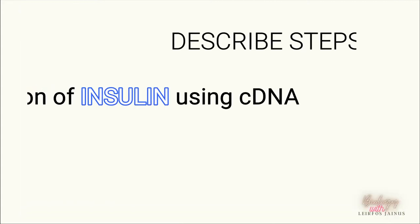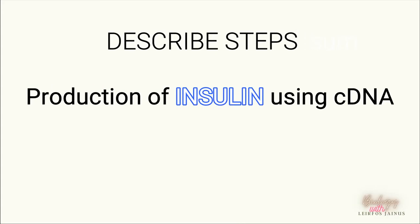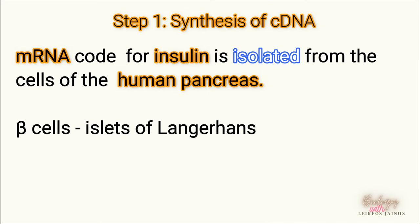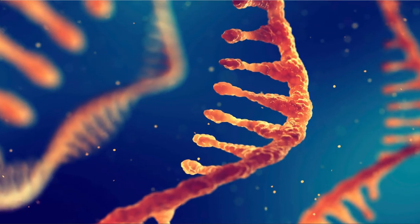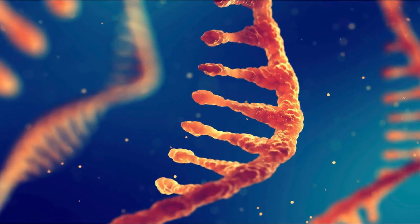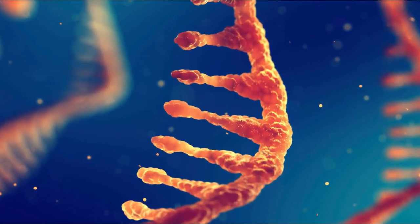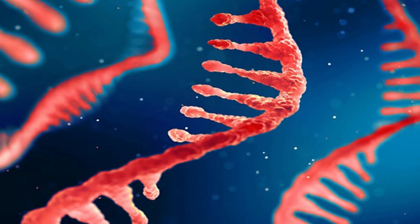Now we will describe the steps involved in the production of insulin using cDNA. First, we isolate the mRNA from human pancreatic cells, specifically the beta cells of the islets of Langerhans. The mRNA is chosen because it is the coding sequence that lacks introns.